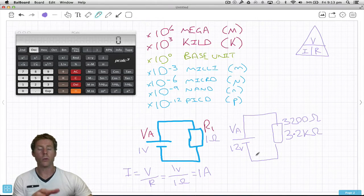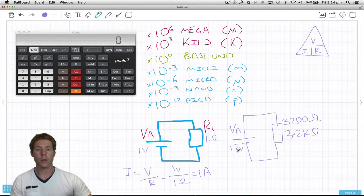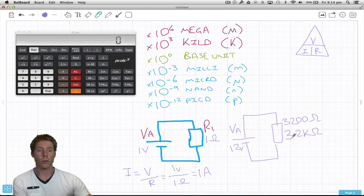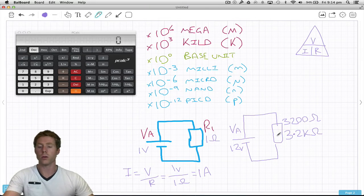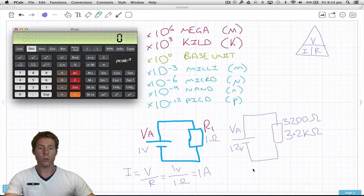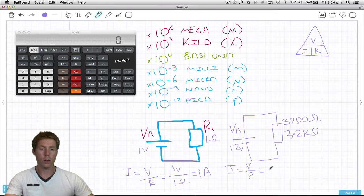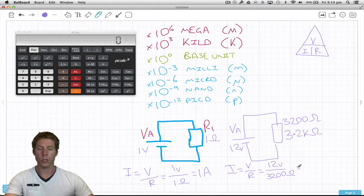For this particular circuit, I want to know how much current is flowing. I've got a 12 volt power supply, a 3200 ohm or 3.2k ohm resistor. Current equals voltage divided by resistance: 12 volts divided by 3200 ohms.